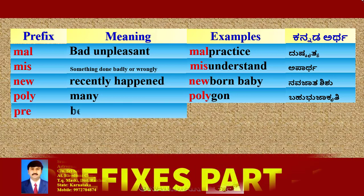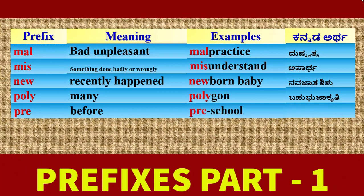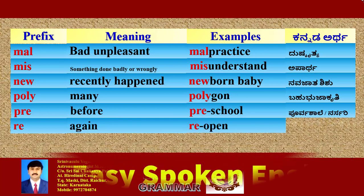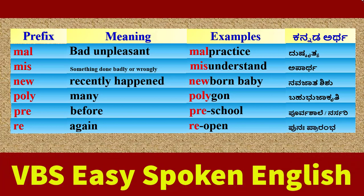Prefix 'Pre': its meaning is 'before'. Example: Pre-School. Kannada meaning: Poorvashale, also known as Nursery. Prefix 'Re': its meaning is 'again'. Example: Re-open. Kannada meaning: Punah Praramba — to begin again.